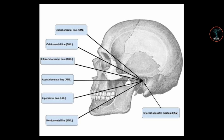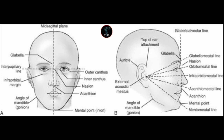The mentomeatal line extends from the mental point of the mandible to the external auditory meatus. In this image you can see these positioning lines clearly, including the external acoustic meatus — the ear pinna — and the various imaginary lines extending from facial landmarks.